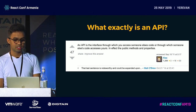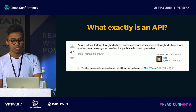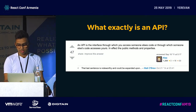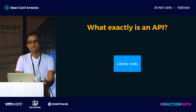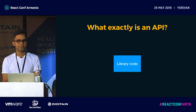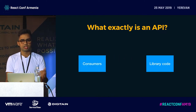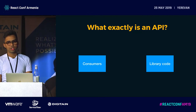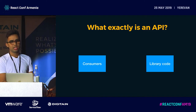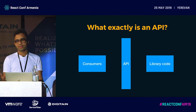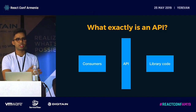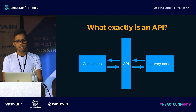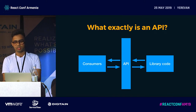The Stack Overflow answer said: an API is an interface through which you access someone else's code, or through which someone else's code accesses yours — in effect, the public methods or properties. For example, if you're a library developer and you write library code that needs to be shared between multiple people, you create a layer called an API which is an interface through which someone else can access your code and manipulate things in your library.